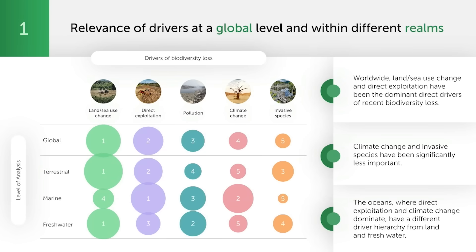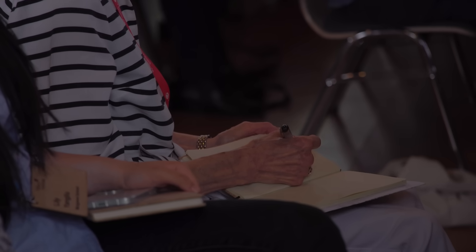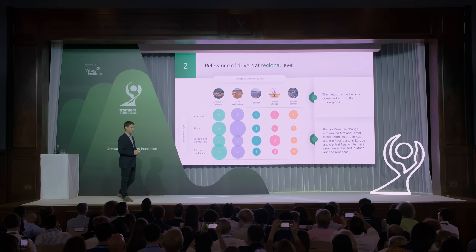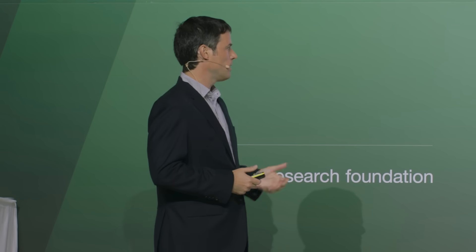At the level of different environments, land use change dominates in terrestrial and freshwater environments, but in marine environments, direct exploitation and climate change are the dominant drivers. At the regional level, we found that the hierarchies of drivers were broadly consistent, meaning they were not significantly different between regions, but we did find some changes in the order for some drivers. For example, land and sea use change and direct exploitation ranked first and second for Europe and Central Asia and Asia and the Pacific, but these ranks were reversed for the Americas and Africa.